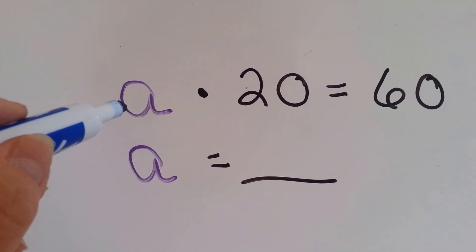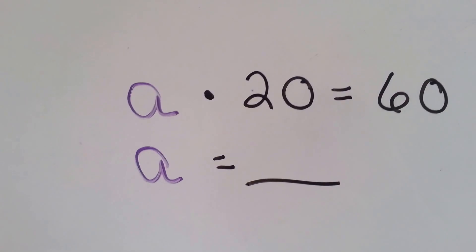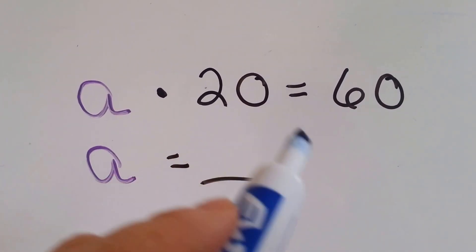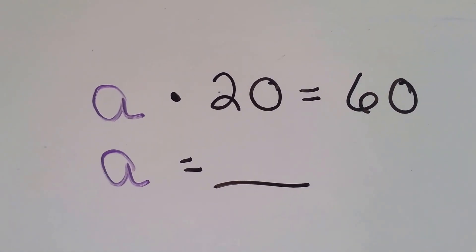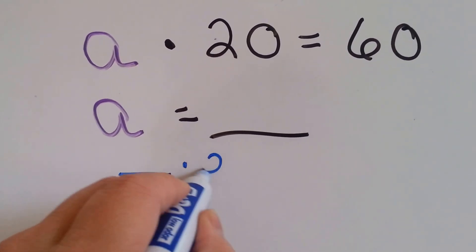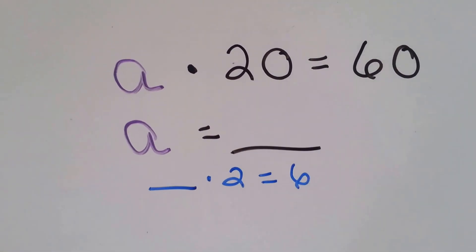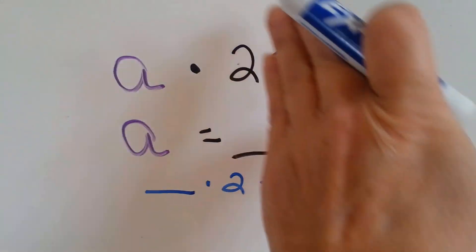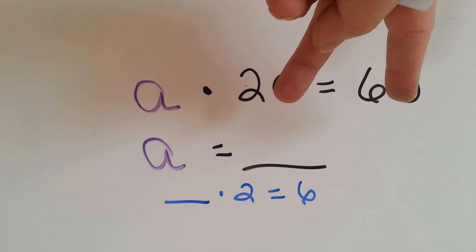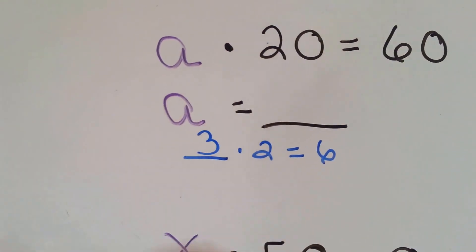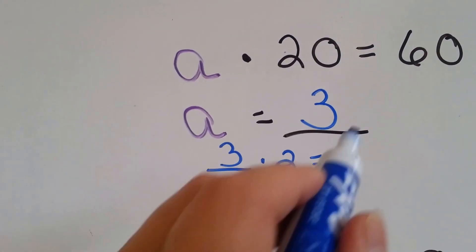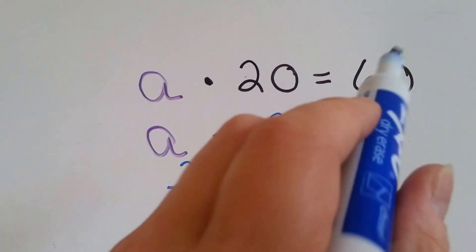The a is going to be our variable, and it's the reason we use the dot so that we don't get confused when using alphabet variables. a times 20 equals 60. What could a equal? Well, something times 2 equals 6 if we took the zeros away. 3 times 2 equals 6. So a is equal to 3. 3 times 20: 20, 40, 60.